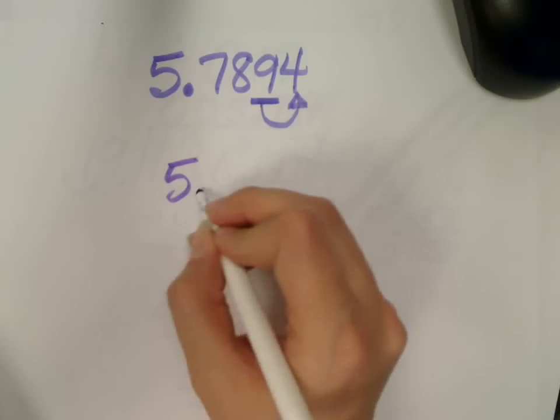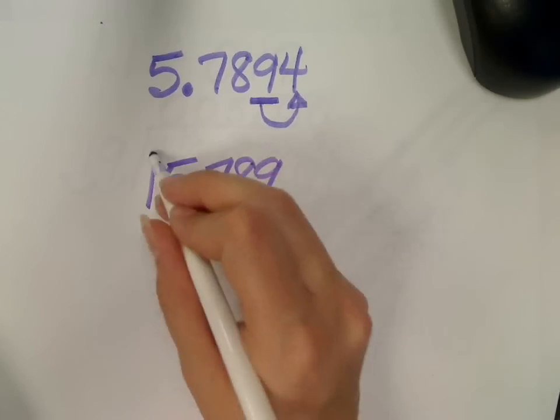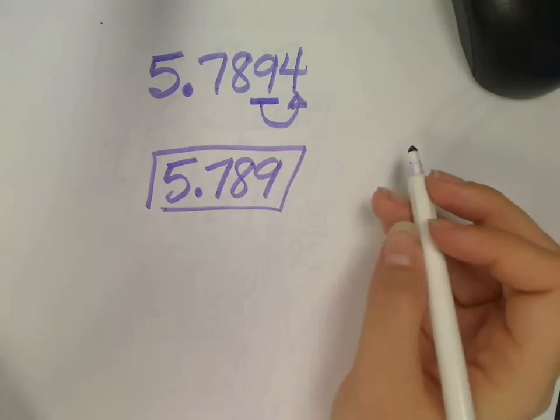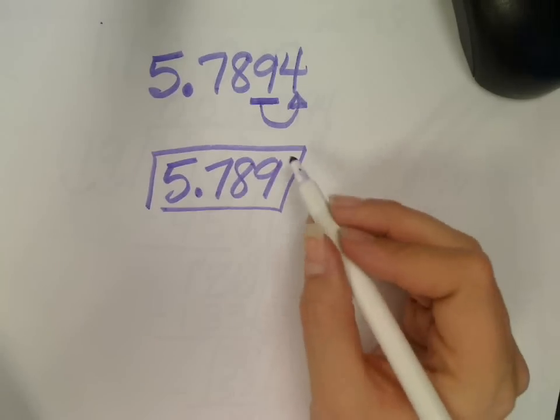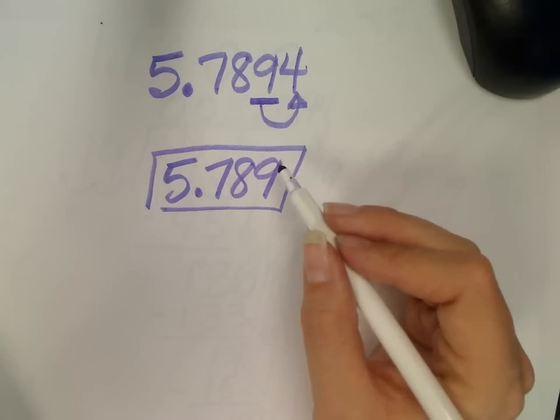So, five, seven, eight, nine, done. It said round to the thousandths, my last digit is in the thousandths place.